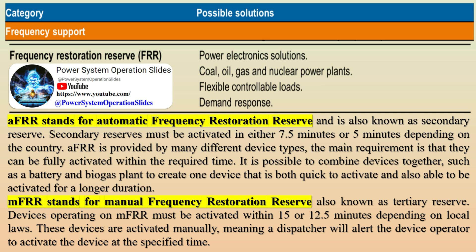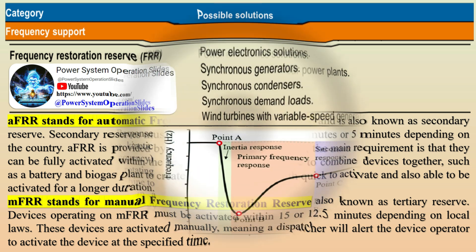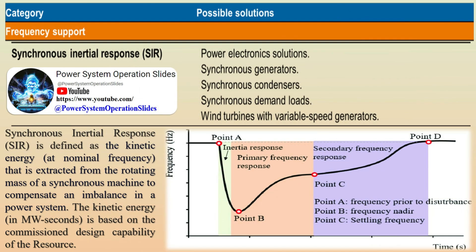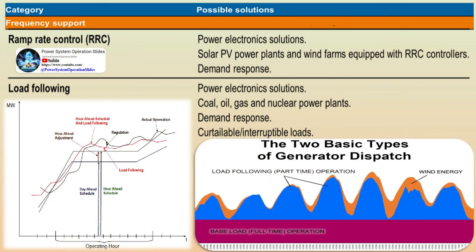AFRR, Automatic Frequency Restoration Reserve, serving as the secondary frequency control mechanism, is responsible for fine-tuning the active power output to rectify frequency deviations and bring interchanges with other systems back to their designated levels following an imbalance, ultimately returning the frequency to its target value. AFRR, also known as secondary reserve or spinning reserve, is the fastest responding reserve category. It is activated automatically in response to deviations in grid frequency, typically within 30 seconds, and provides a short-term burst of power for a limited time, usually up to 12.5 minutes.